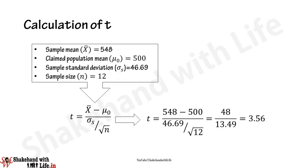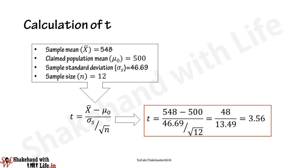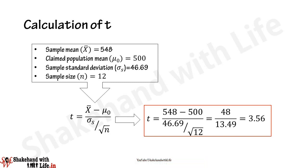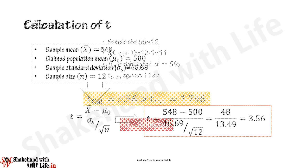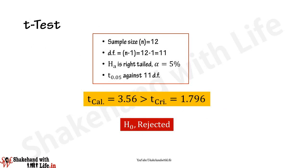Now calculate the t value by replacing x-bar and mu-naught in the numerator, and sigma-s and n in the denominator of the T-statistic. The sample mean x-bar is 548, the claimed population mean mu-naught is 500, the sample standard deviation sigma-s is 46.69, and the sample size n is 12. Solving the equation, the t value comes out as 3.56. Since n equals 12, the degrees of freedom is 12 minus 1, equal to 11.